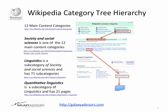Let's look at that hierarchical tree structure. If you're at the 12 main content categories and click on one, it takes you to a subcategory. In this example I clicked on Society and Social Sciences — one of the 12 main categories — which opens a window of subcategories. Linguistics is a subcategory of Society and Social Sciences and has 71 subcategories. Choosing the linguistic subcategory Quantitative Linguistics, I find it has 21 pages attached to it, showing how your topic fits into a larger category classification tree.